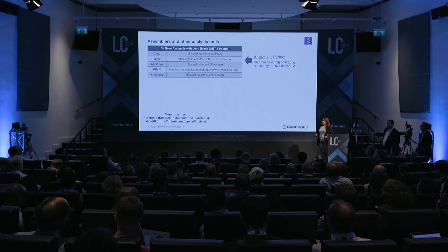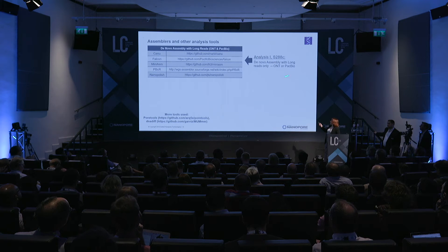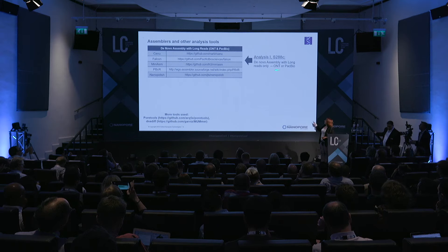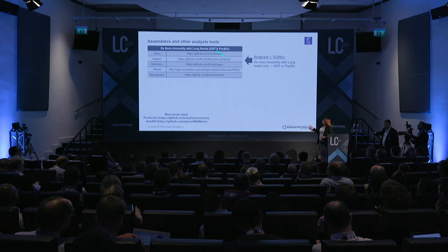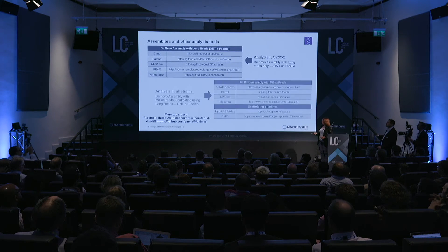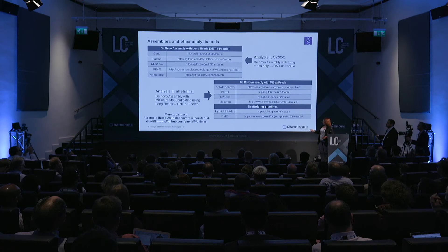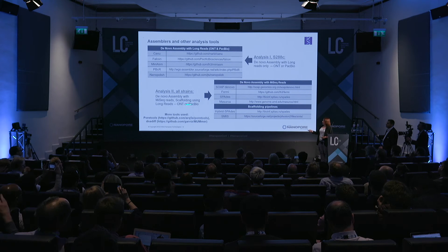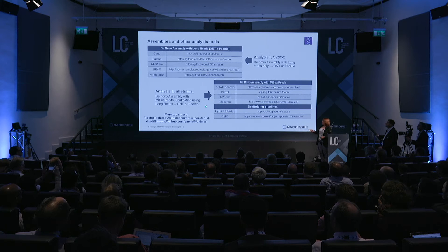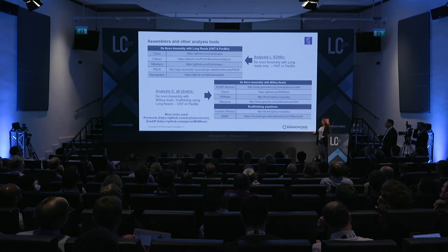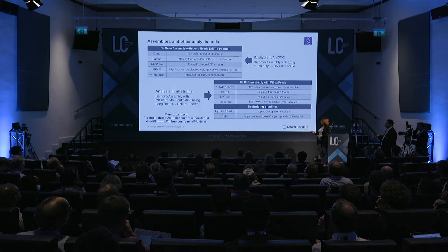We did two types of analysis of this data. The first one — because we had enough coverage for the Nanopore sample on the reference strain — we did a de novo assembly using only long reads, using a number of tools with links provided. The second type of analysis we did on all the strains: a hybrid assembly where we do de novo assembly using MiSeq reads and then scaffold using the long reads. Because of time constraints, I will show only some results from the first type of analysis today, but I will have the poster later if you want more information on the other.